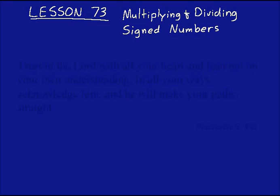Lesson 73 is on multiplying and dividing signed numbers. Let's just do a couple of examples here.